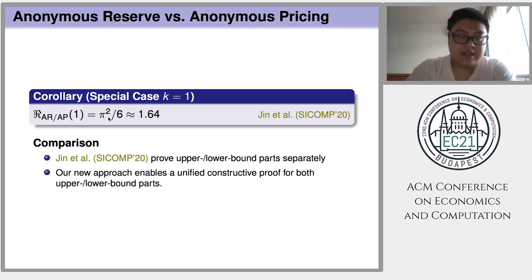The most interesting aspect of our proof for this special case is that in the earlier work of this SICOMP 20 paper, they proved the upper bound and lower bound parts separately. Instead, our new approach enables a unified constructive proof for both sides.